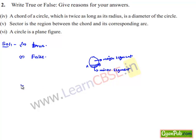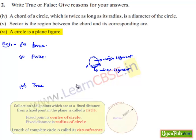Moving on to the sixth bit: a circle is a plane figure — that is true, because by the definition we can say that a collection of all points in a plane which are at a fixed distance from a fixed point in a plane is called a circle.